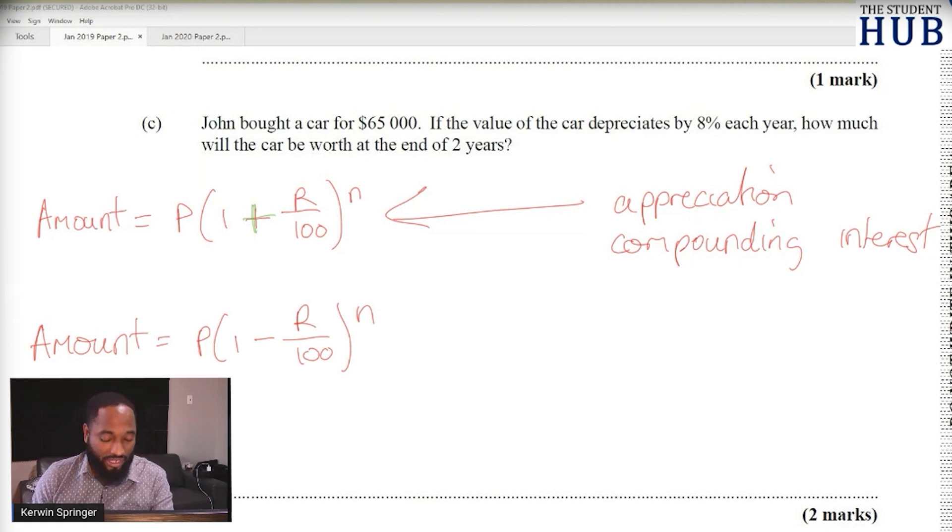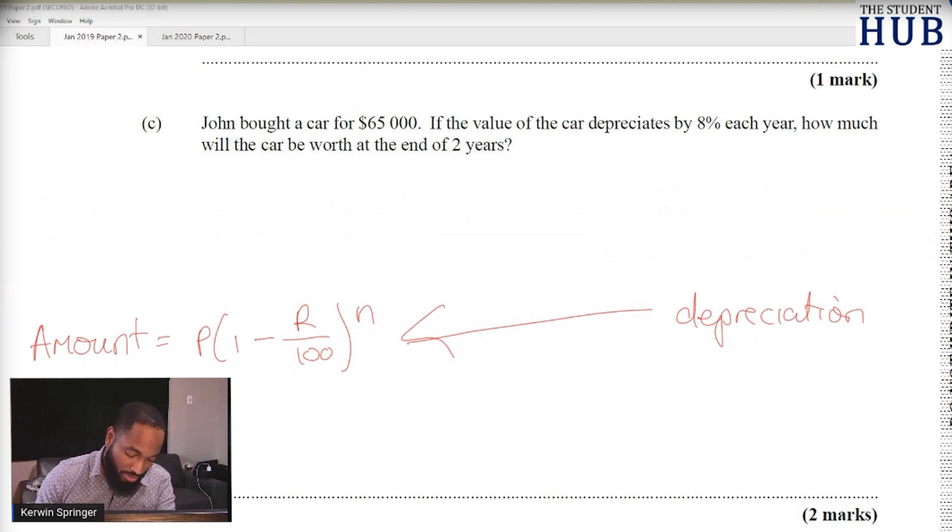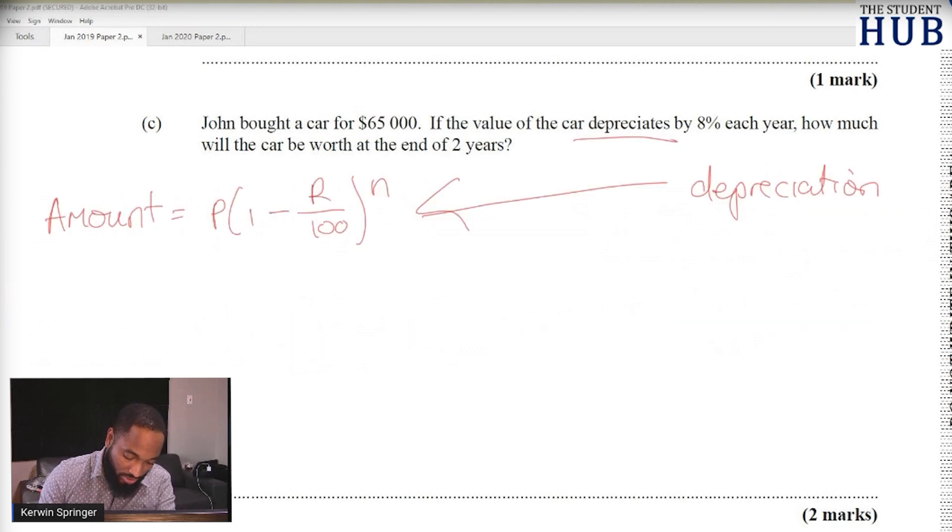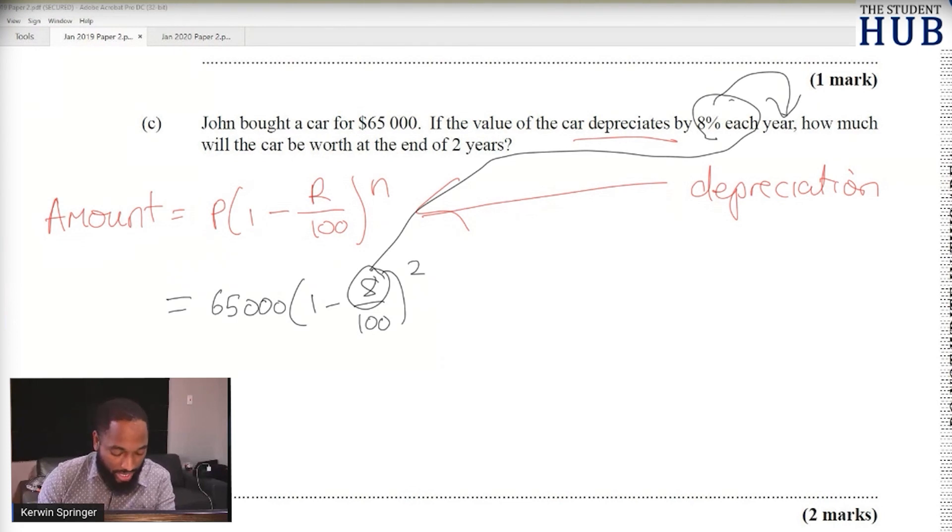This is the formula that we use for depreciation. You need to have it memorized - I don't believe this is given in the formula sheet. So substituting in this formula: the principle is 65,000, one minus 8 over 100, and it's for a period of 2 years. This n here tells me how many times it's compounded, and the exponent is how many of those periods we have.